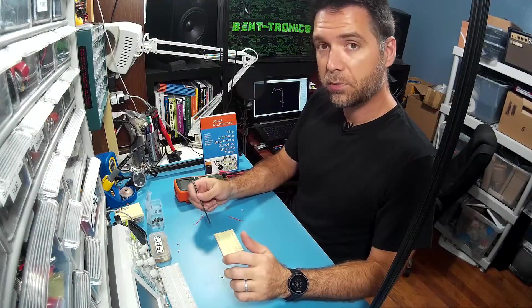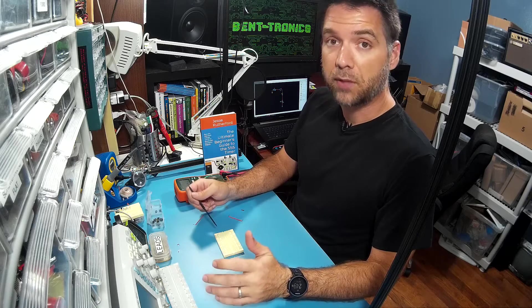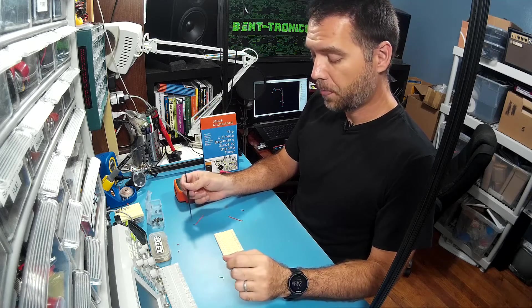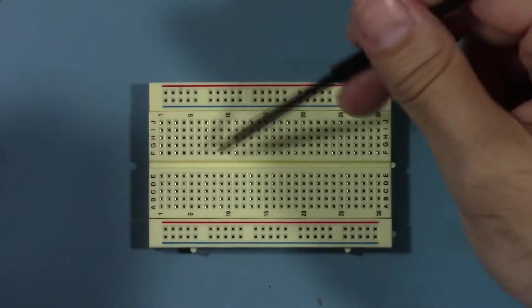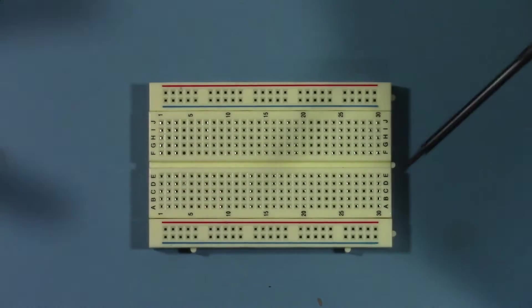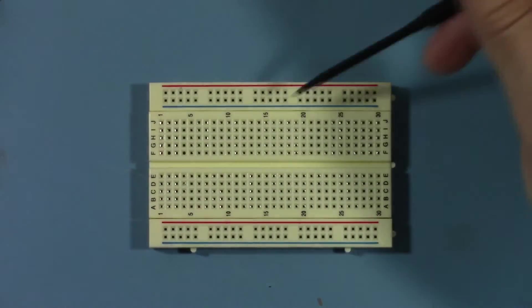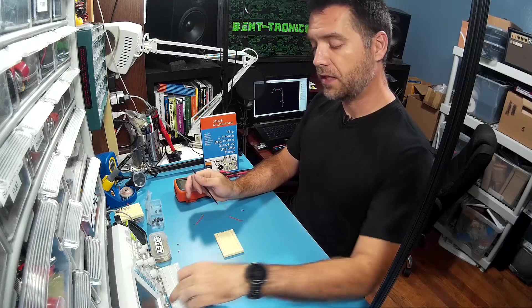I have a 400 point solderless breadboard on my bench right now. Each one of these holes is called a tie point usually, and there happens to be 400 on this. There are many other sizes.